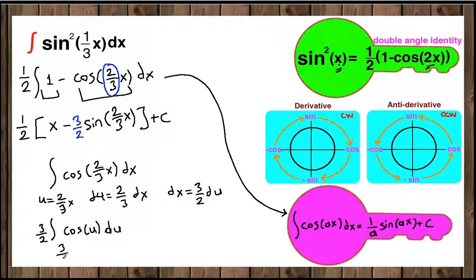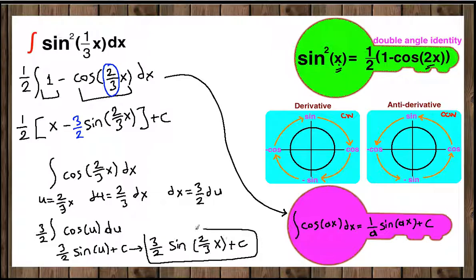The antiderivative of cosine is positive sine, so 3/2 sin(u) plus C. You can bring u back, which gives 3/2 sin(2/3 x) plus C.